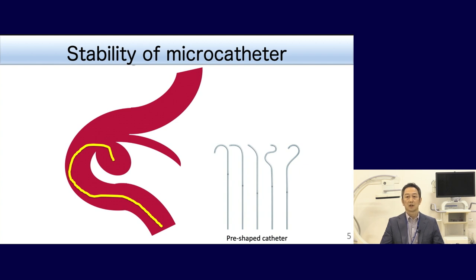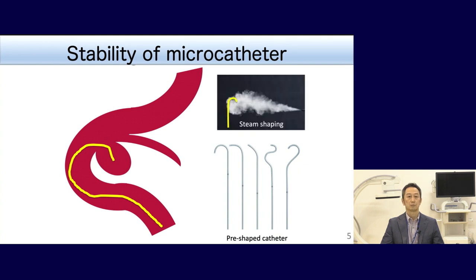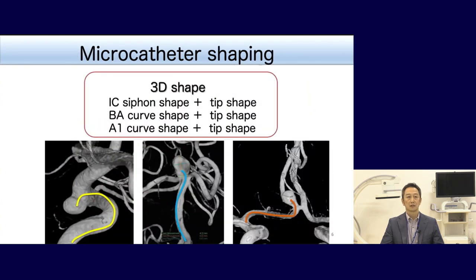There are several kinds of pre-shaped catheters, and you can also make your favorite shape by steaming. When I do catheter shaping, I always make a 3D shape, because a microcatheter with only a 2D shape would rotate and be unstable in the vessel. I make a siphon shape and tip shape for IC aneurysms, a vascular curve and tip shape for vascular tip aneurysms, and an A1 curve and tip shape for ACOM aneurysms.